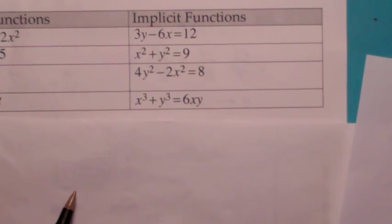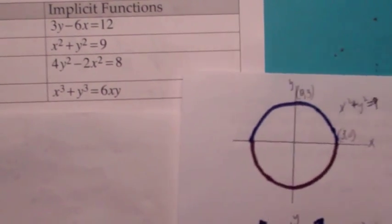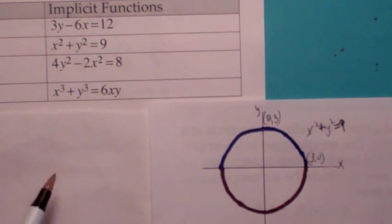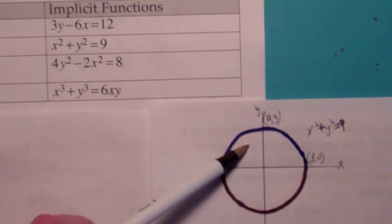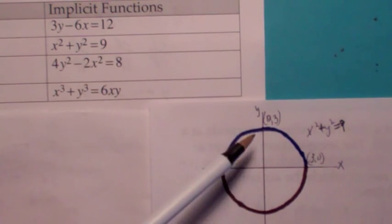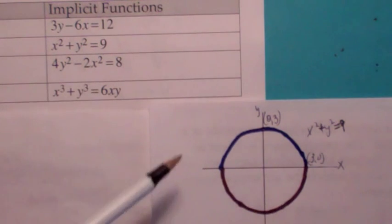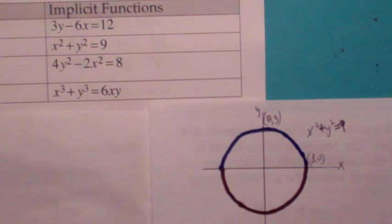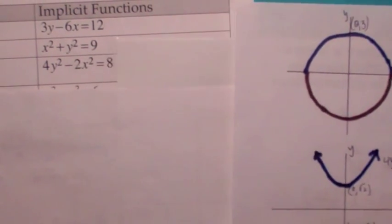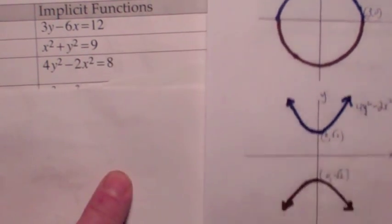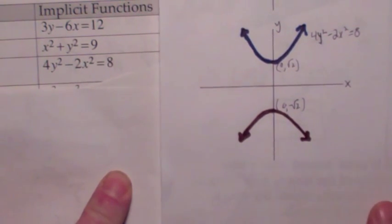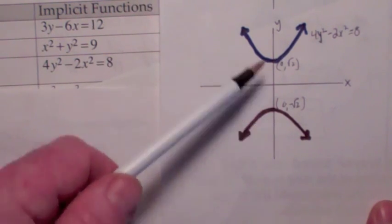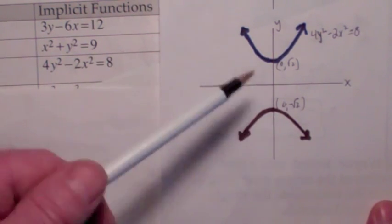Implicit functions are ones where you have equations that are not solved for y, and in fact they might not be functions at all. However, they would define functions if you restrict to just looking at a piece of the graph. The second equation is not a function — it's an equation of a circle. But if you look at the graph of the circle, this equation actually defines two functions: the upper half and the lower half separately, each of which is a function. The same is true with the third equation, which is a hyperbola — each branch defines a function of x.